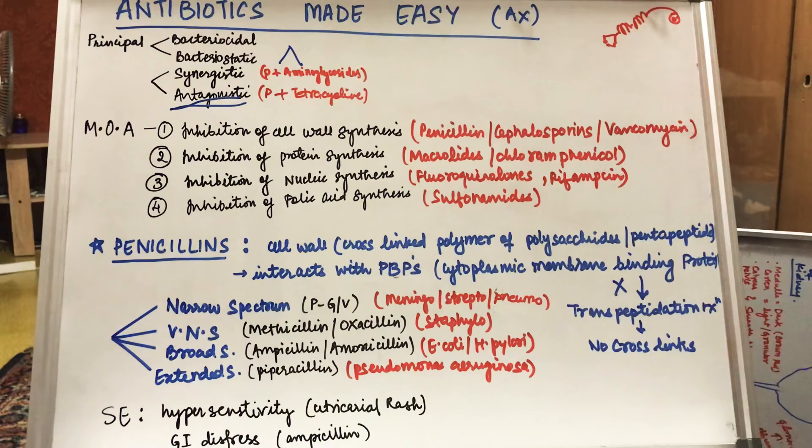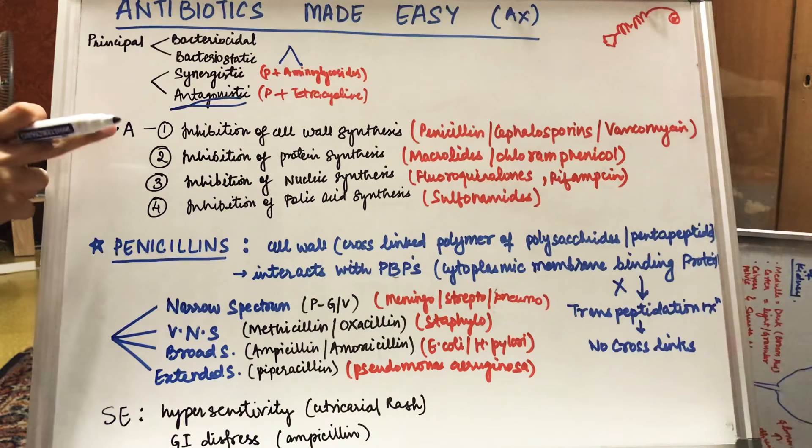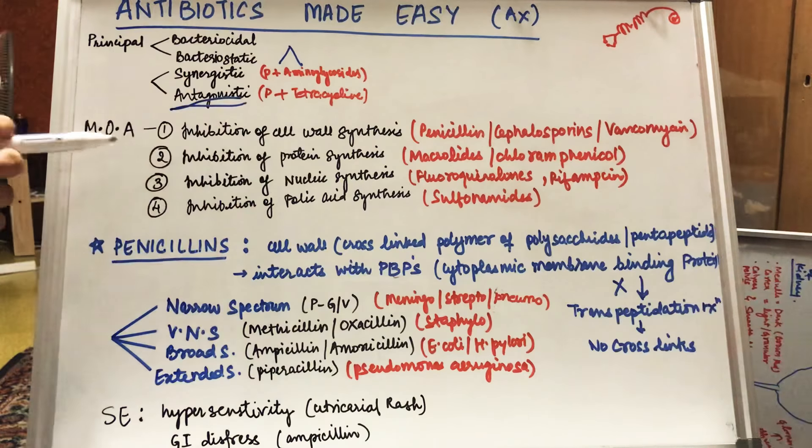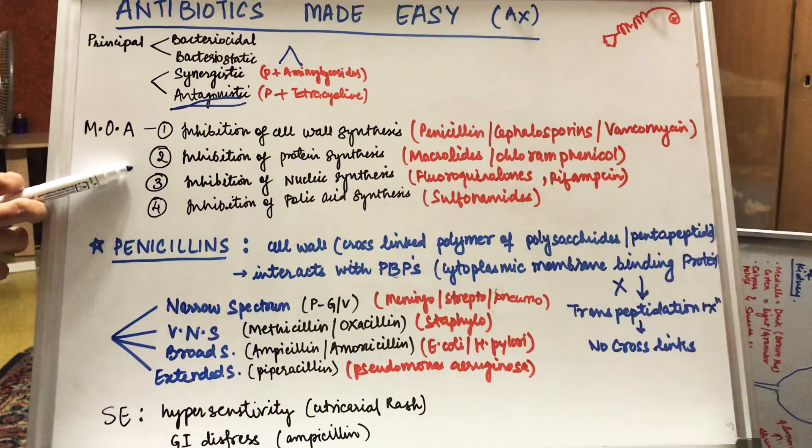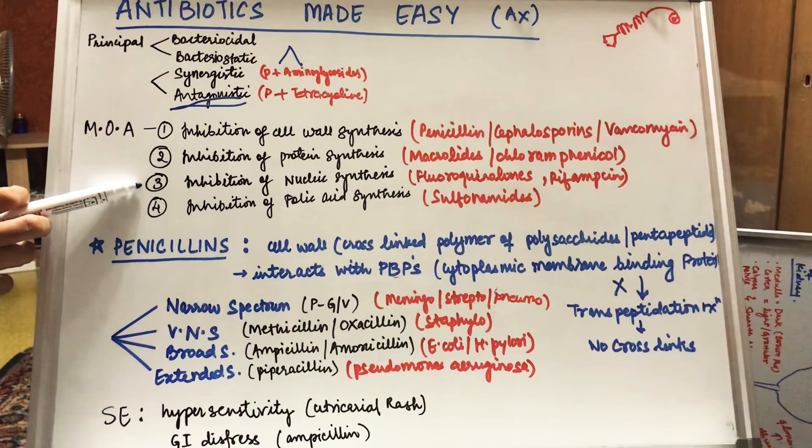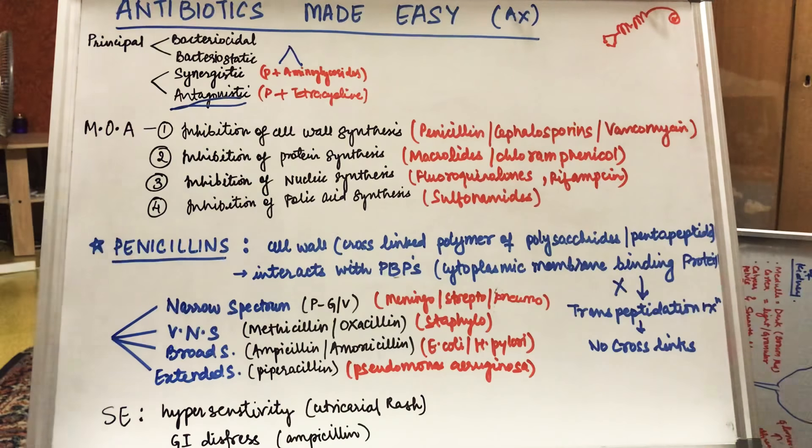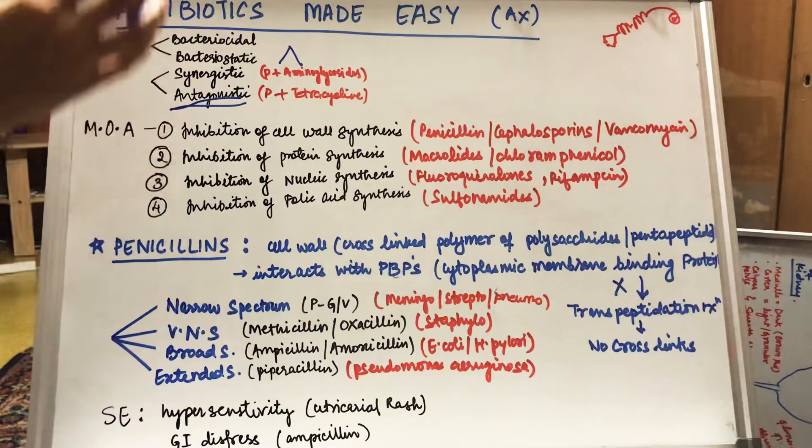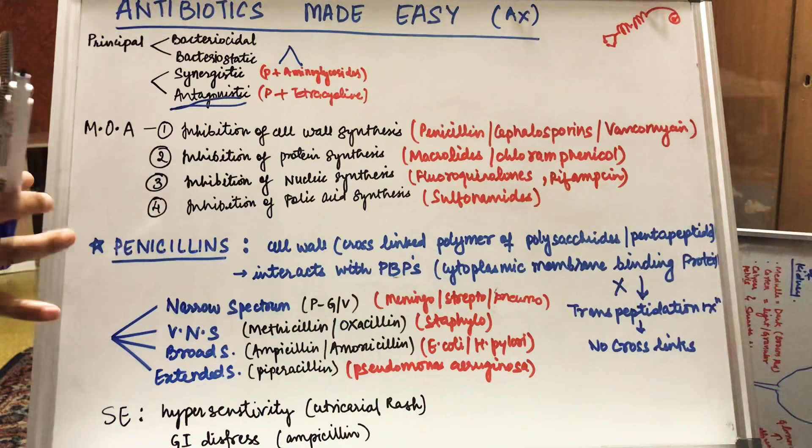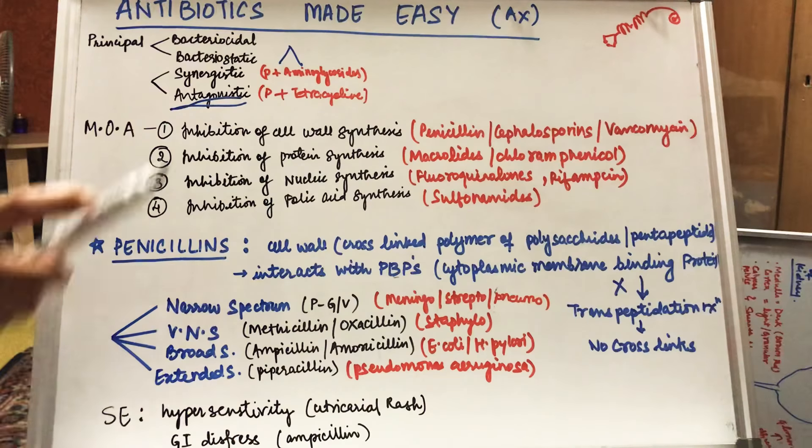Now we will start with mechanism of actions. There are four mechanisms of action on which antibiotics work. First one is inhibition of cell wall synthesis. Second one is inhibition of protein synthesis. Third one is inhibition of nucleic synthesis and fourth one is inhibition of folic acid synthesis.